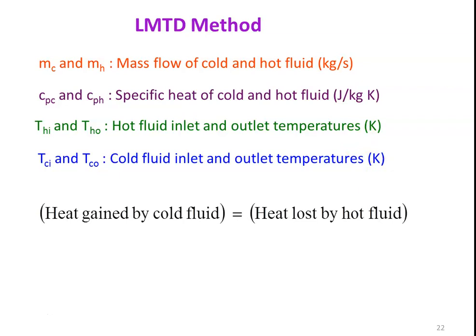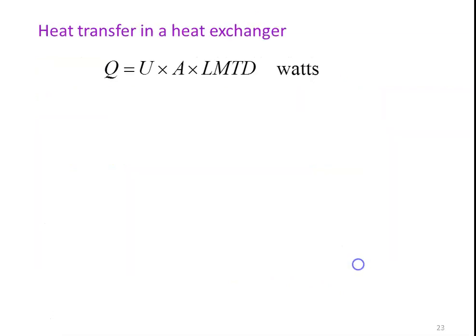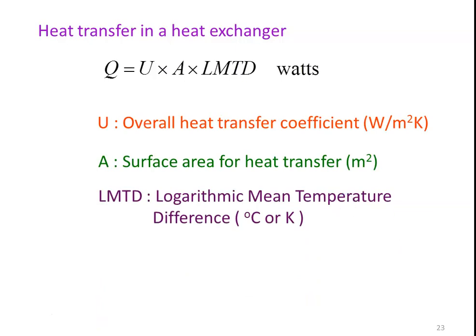The philosophy for the LMTD method is: heat gain by the cold fluid equals heat loss by the hot fluid. So Q = Mc·Cpc·(Tco − Tci) = Mh·Cph·(Thi − Tho). We also calculate the heat transfer area using Q = U·A·LMTD, where U is the overall heat transfer coefficient, A is the surface area, and LMTD is the logarithmic mean temperature difference in degrees Celsius or Kelvin.